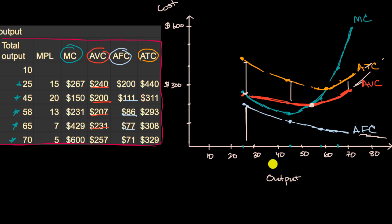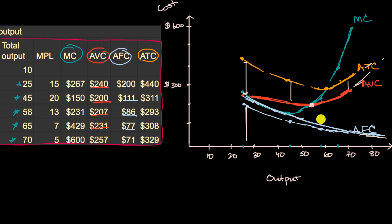Let's start with a change in your fixed costs. Let's say your rent goes up — what would happen then? Pause this video and think about what would happen visually. Well, your average fixed costs would shift up. And your average total cost is a combination of your average variable cost and your average fixed cost, so the amount that your average fixed cost went up for any quantity, your average total cost would also go up that amount.